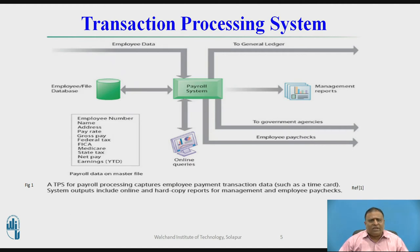Once a transaction is input to the system, it updates the system's master file that permanently maintains employee information for the organization. The data in the system are combined in different ways to create reports of interest to management and government agencies, and to send paychecks to employees. Managers need transaction processing systems to monitor the status of internal operations and the firm's relations with the external environment. Transaction processing systems are also major producers of information for other systems and business functions.